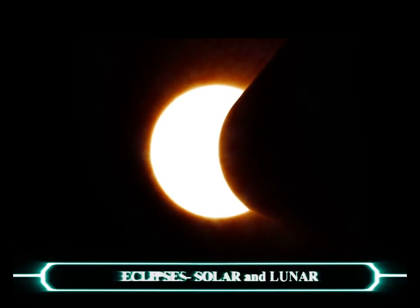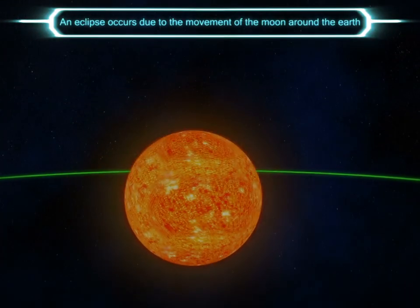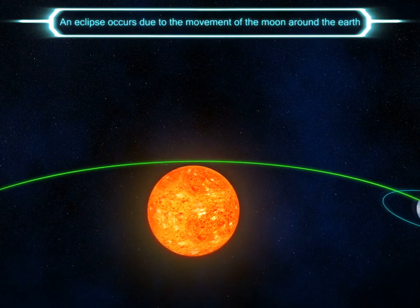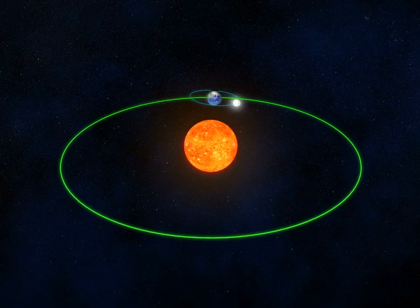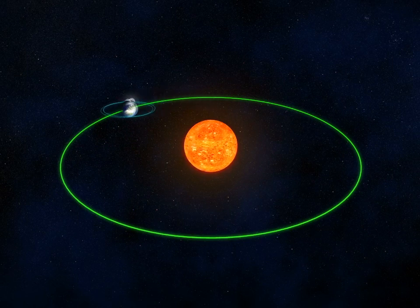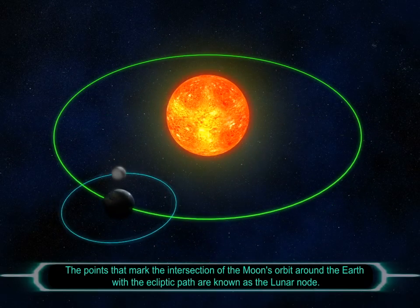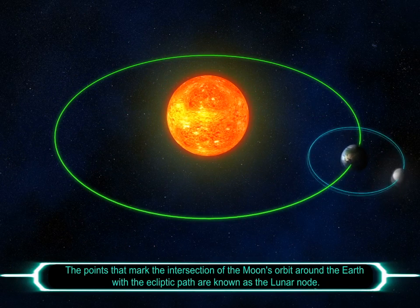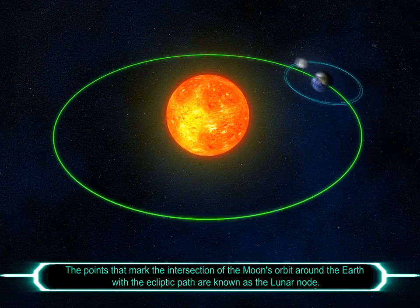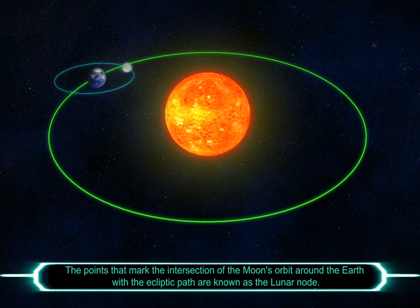Eclipses — solar and lunar. An eclipse occurs due to the movement of the moon around the earth. Both a solar and a lunar eclipse occur only when the sun, the moon, and the earth are aligned together.